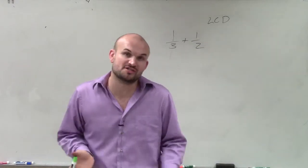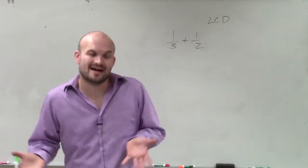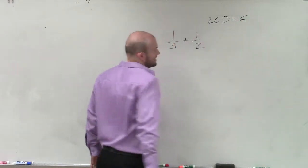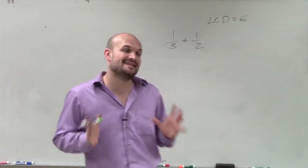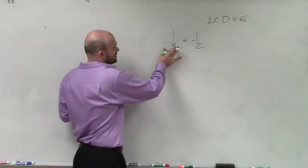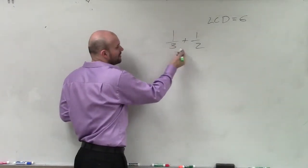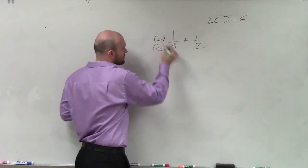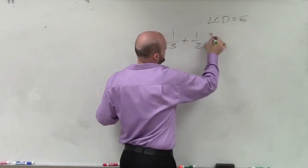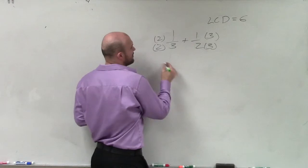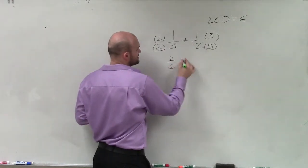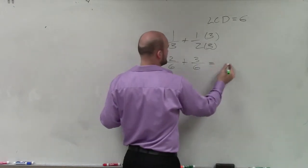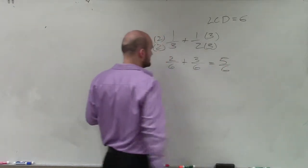Remember, that is going to be the smallest number that both 3 and 2 divide into. So I can take the multiples of 3 and 2, and that's going to give me 6. So therefore, to combine these two fractions, I need to have the denominators at 6. I look at 1 third and say, what do I need to multiply that by to have a 6 in the denominator? That's going to be 2 over 2. And over here, that's going to be 3 over 3. Therefore, I have 2 over 6 plus 3 over 6, and now I can simplify this to 5 over 6.